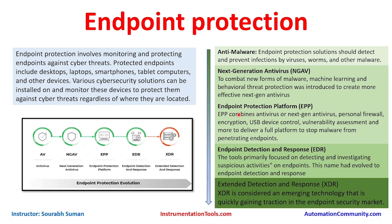Next is the Endpoint Protection Platform (EPP). EPP combines antivirus, next-gen antivirus, personal firewalls, encryption, USB device control, vulnerability assessment, and more to deliver a full platform to stop malware from penetrating endpoints. At today's stage, most applications and industrial workstations are at this level — though some older systems may still have only antivirus or anti-malware.